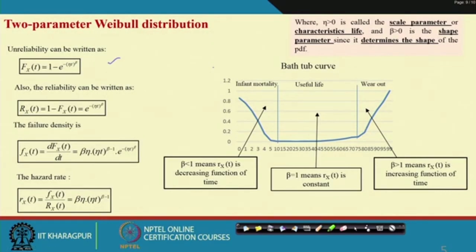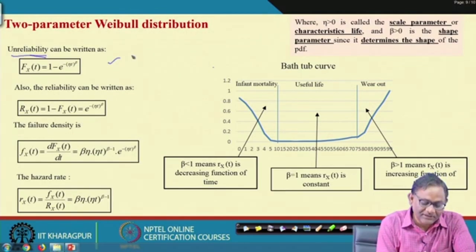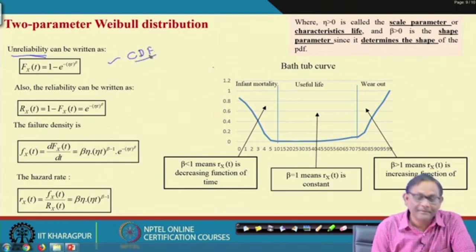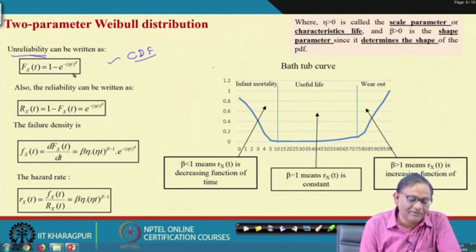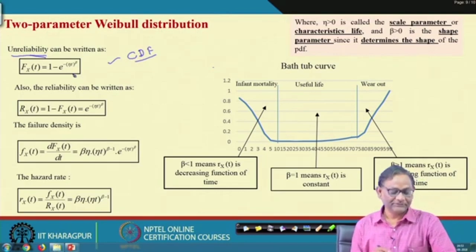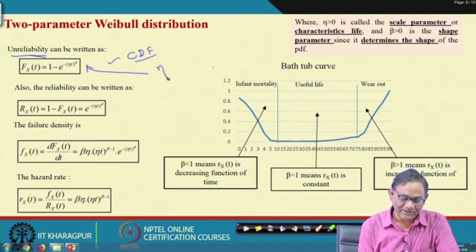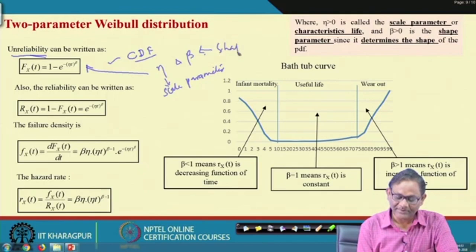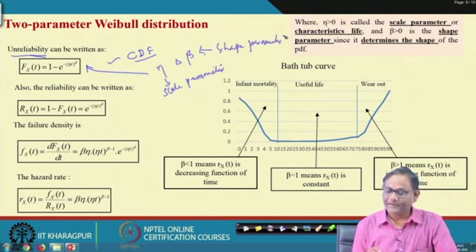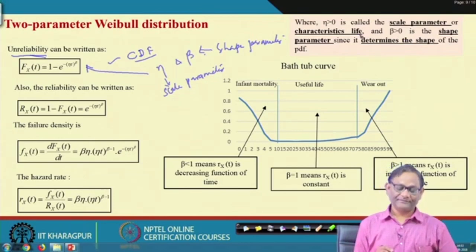Let us see the different parameters of Weibull distribution. The first one is unreliability, which is basically the cumulative distribution function (CDF). The CDF is: F(t) = 1 − e^(−η · t^β). So we get two parameters: η (eta), known as the scale parameter or characteristic life, and β (beta), known as the shape parameter.